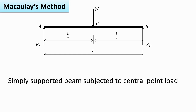In this video, we will see how Macaulay's method can be used to find out slope and deflection in case of a simply supported beam subjected to a central point load W. The arrangement of the beam is shown in the figure. The total span length is L. As it is a central point load W, the distance is L/2 from the left-hand support as well as L/2 from the right-hand support.